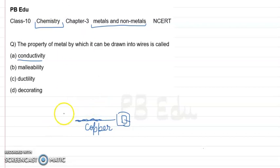then the bulb would glow by passing through copper, which is a metal. Therefore, the passage of electricity is possible through metals, and this property is called conductivity. But the property by which metals are drawn into wires is not called conductivity. Therefore, option A is incorrect.